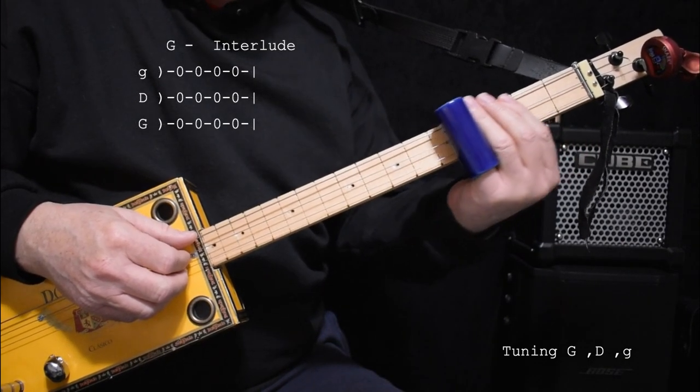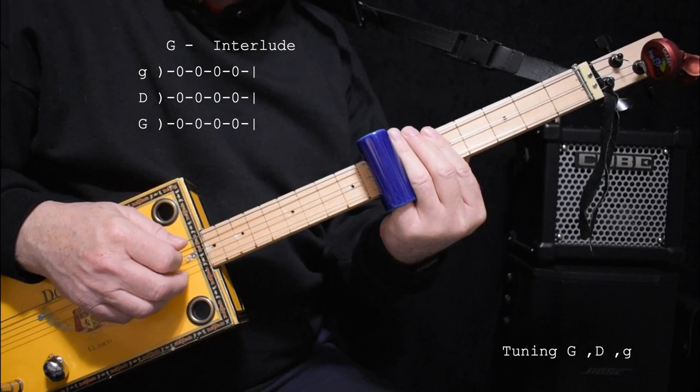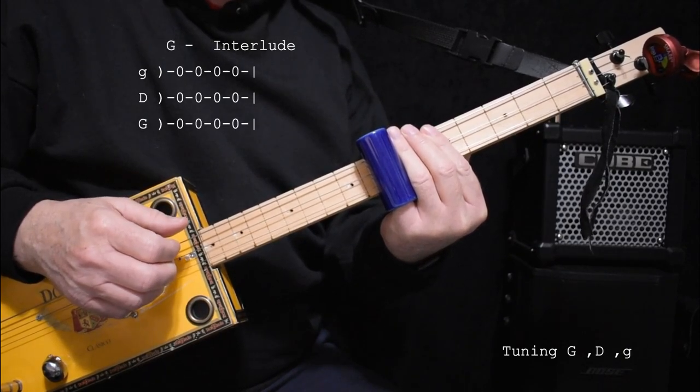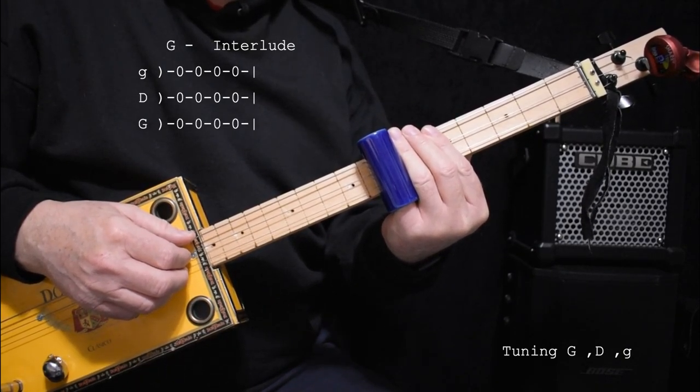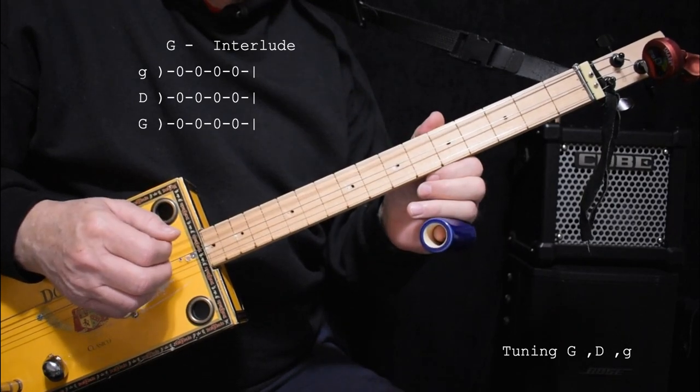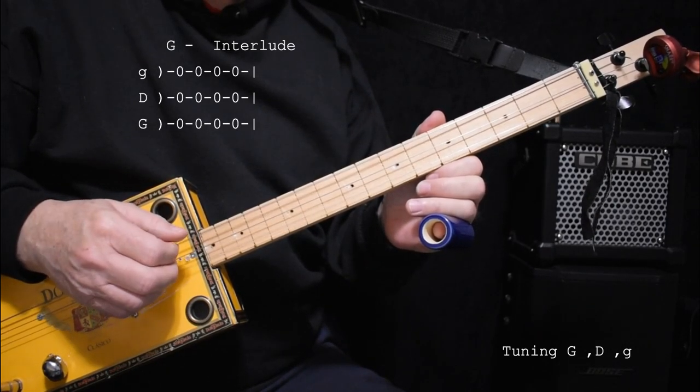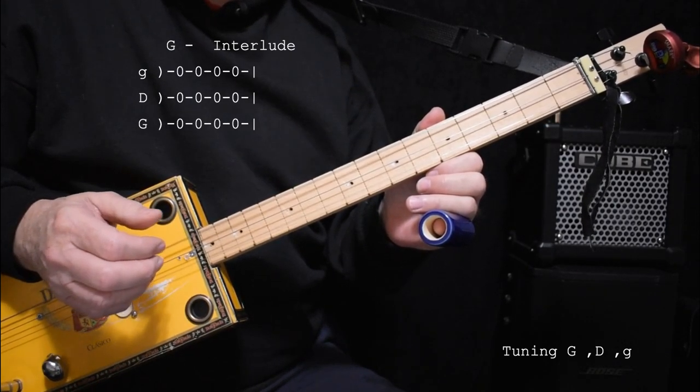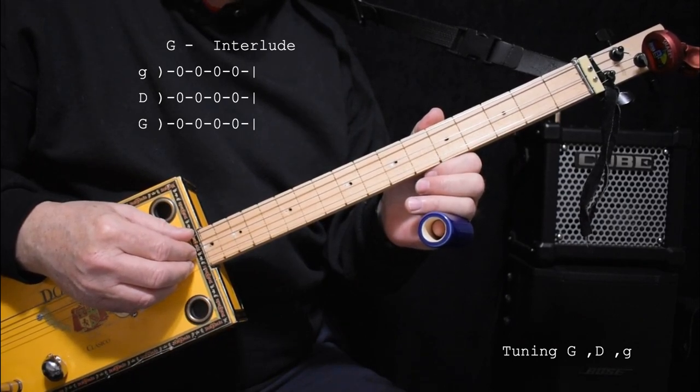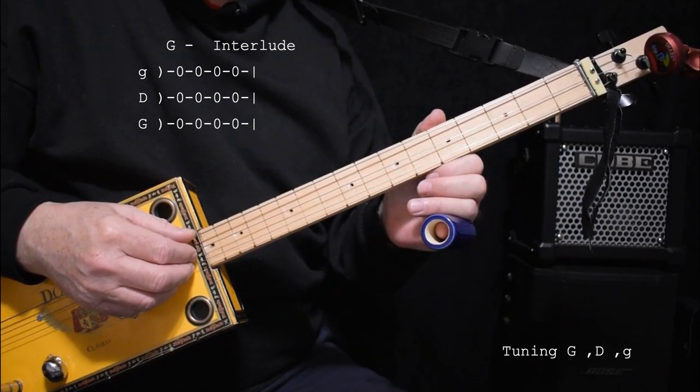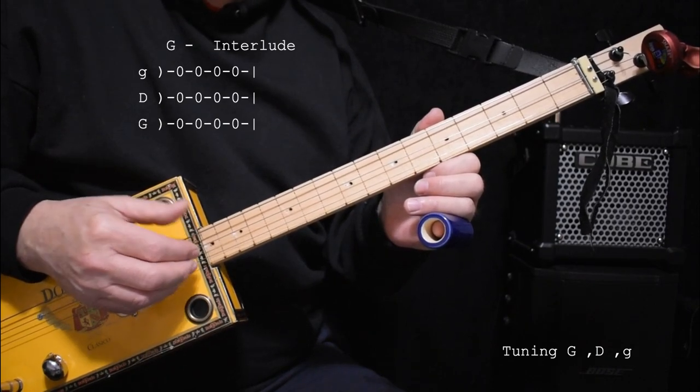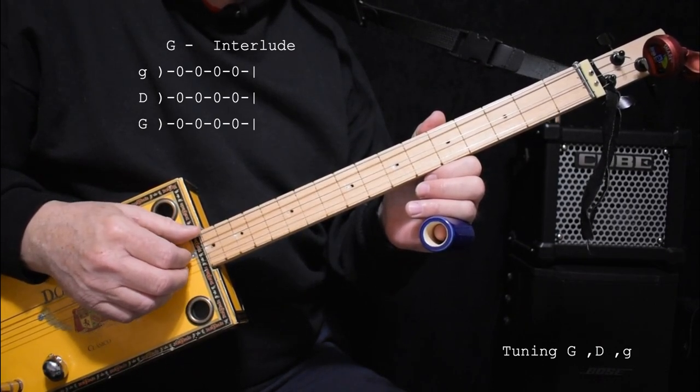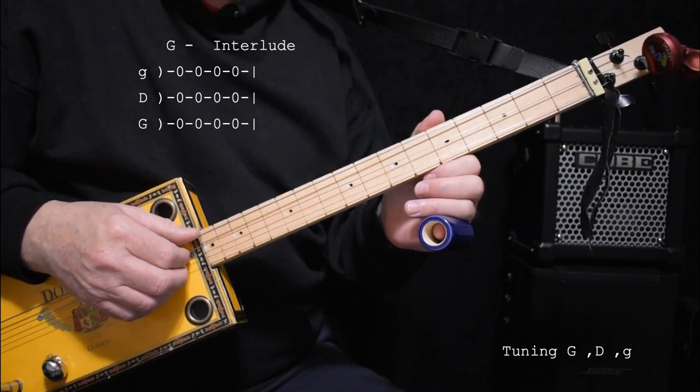And how you get into that is when you're up on the seven, you go to G, which is open for four beats. One, two, three, four. Just like that. That's kind of an interlude or a transition to bring us into the next part of the song. Very simple. One, two, three, four.